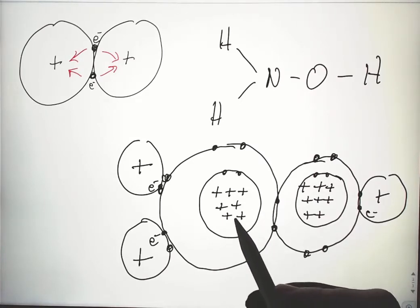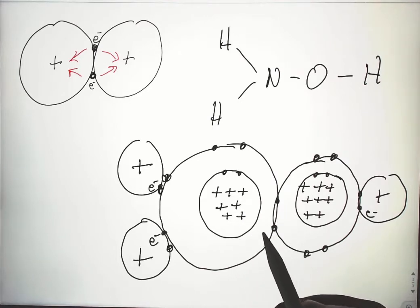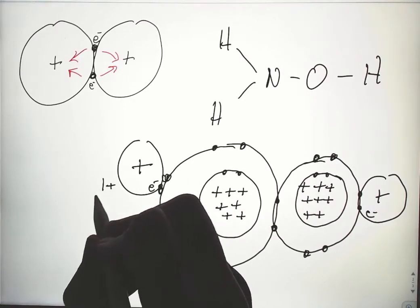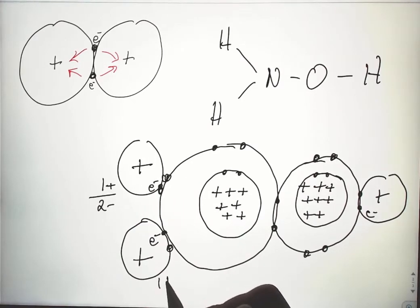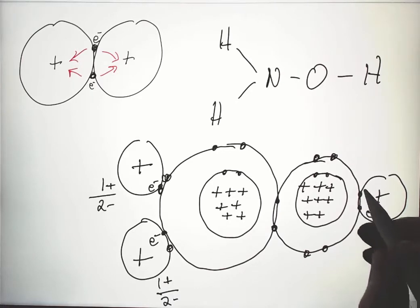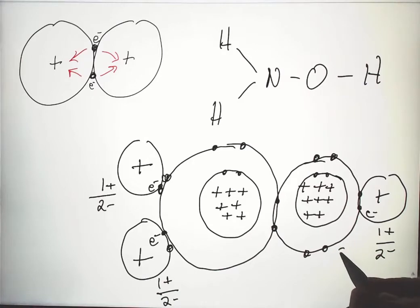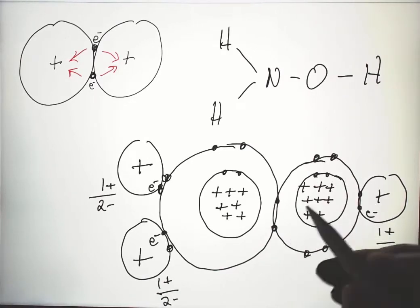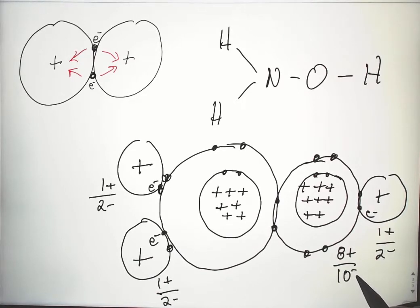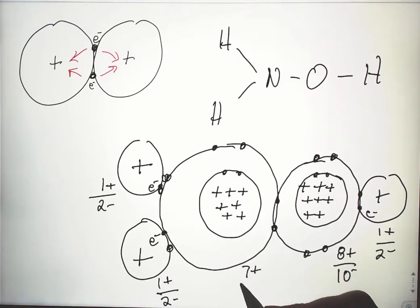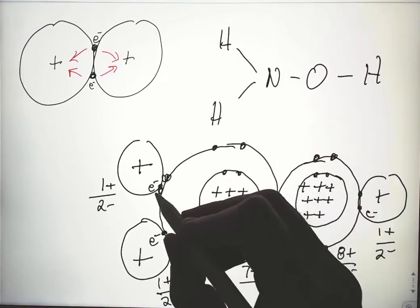Now let's look at the positive charge attracting these electrons. For these hydrogens, we have one positive charge attracting two negative charges. In the case of oxygen, we have eight positive charges attracting ten negative charges. And in the case of nitrogen, we have seven positive charges attracting ten negative charges.